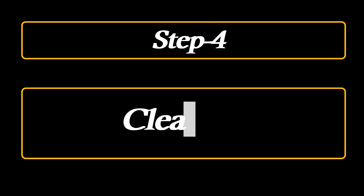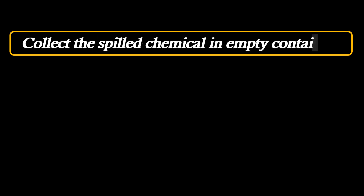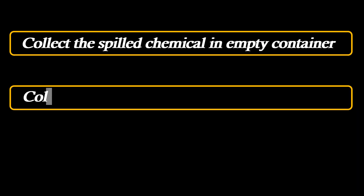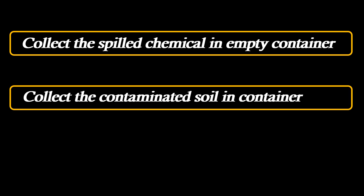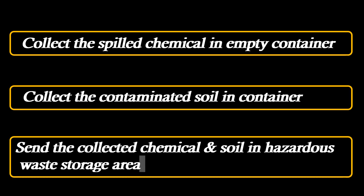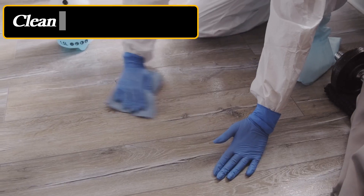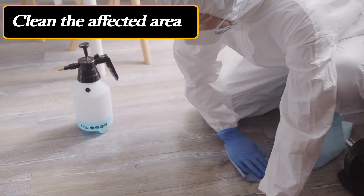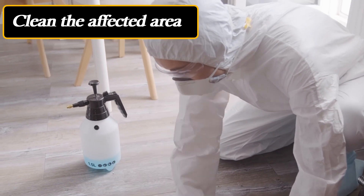Step 4: Cleaning. Collect the spilled chemical in an empty container. If soil is contaminated, then collect the contaminated soil also in a container. Send the collected chemical and soil to the hazardous waste storage area for further disposal, then clean up the affected area.